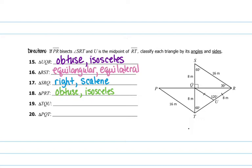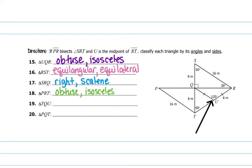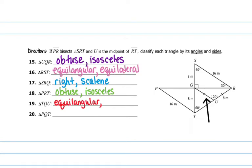And then TQU, which is this little triangle down here in the middle: we have 60 degrees. This must be 60 because 120 plus 60 is 180, and therefore this one must also be 60. So all three corners are 60 degrees, making it equiangular. And the sides are all the same measure — this tick mark shows 8 meters, 8 meters, and 8 meters — so it's equiangular and equilateral.